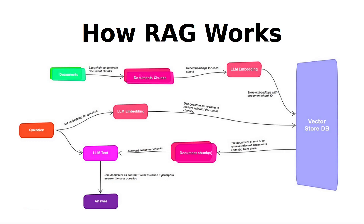Let me explain RAG from a programmer's point of view — how it works in the background. We have a bunch of documents, which you can think of as information. Instead of retraining the model, we have documents containing the latest information. Using something like LangChain or ChromaDB, we split these documents into different chunks, then generate embeddings from those chunks, and store the embeddings in a vector store or vector database such as Chroma or FAISS.